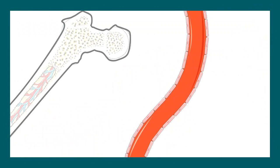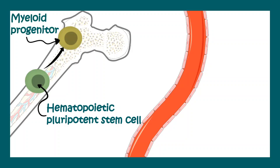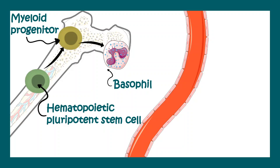Basophils are generated in the bone marrow. Everything starts from the hematopoietic pluripotent stem cell, which ultimately gives rise to the myeloid progenitor, and the myeloid progenitor ultimately gives rise to the basophil. Once generated in the bone marrow, it gets secreted into the bloodstream.